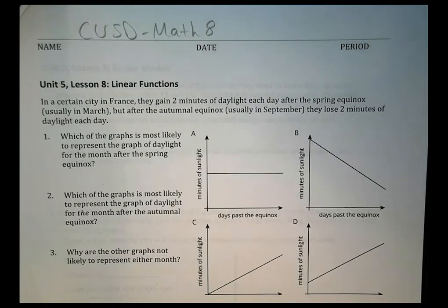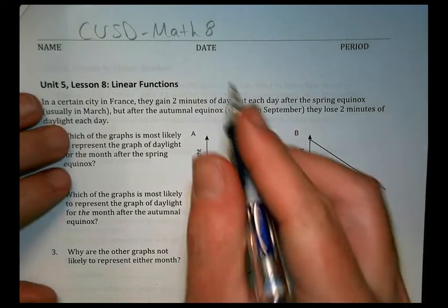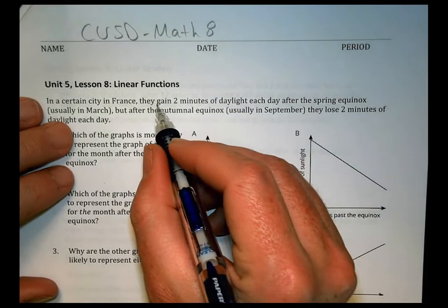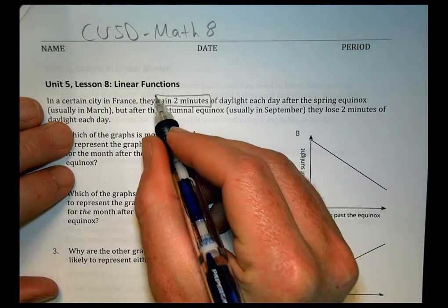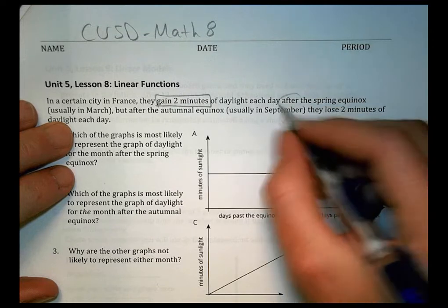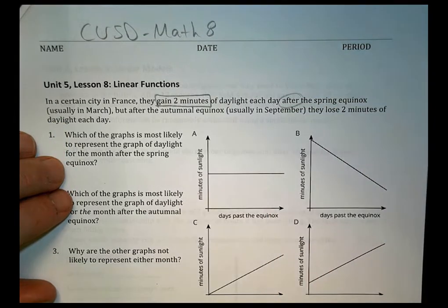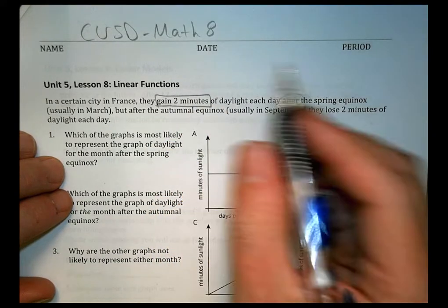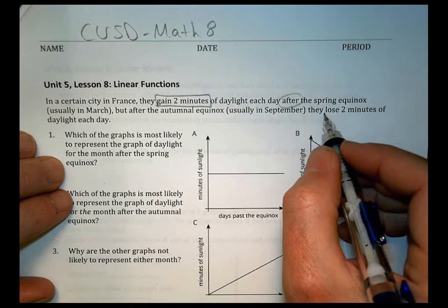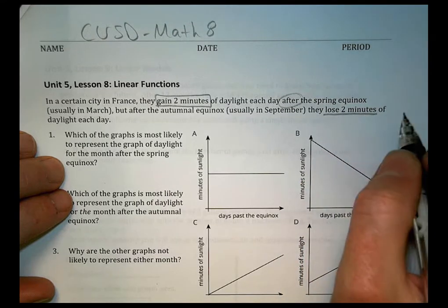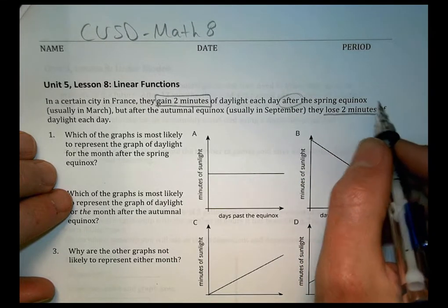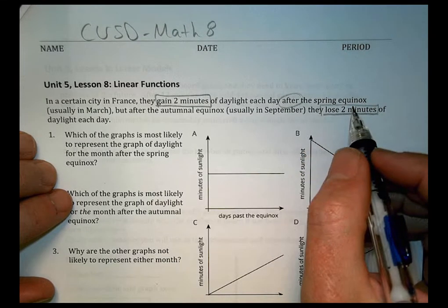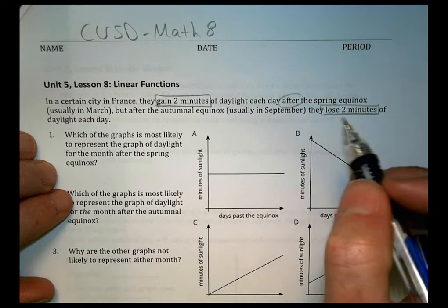This first one is based mostly on your lessons, so let's talk through parts of it together. It says in a certain city in France, they gain two minutes of daylight each day after the spring equinox, usually in March. But after the autumnal equinox, usually in September, they lose two minutes of daylight. So first we're going to gain two, and then we're going to lose two at these certain points in the year.